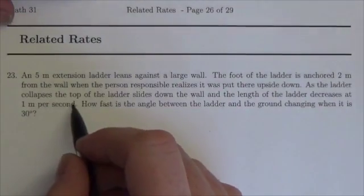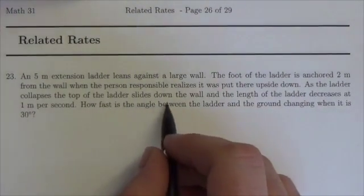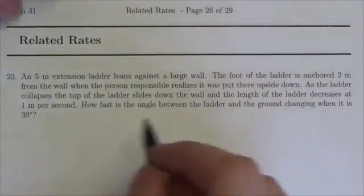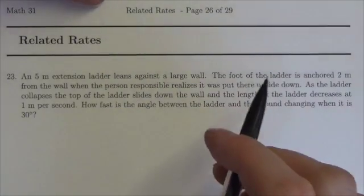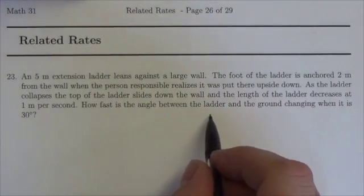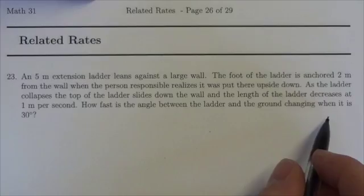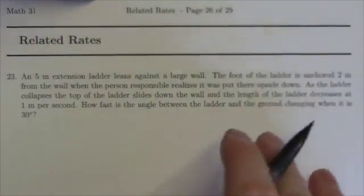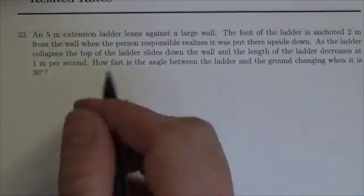So as the ladder collapses, the top of the ladder slides down the wall and the length of the ladder decreases at 1 meter per second. How fast is the angle between the ladder and the ground changing when it is 30 degrees? Let's take a look here.